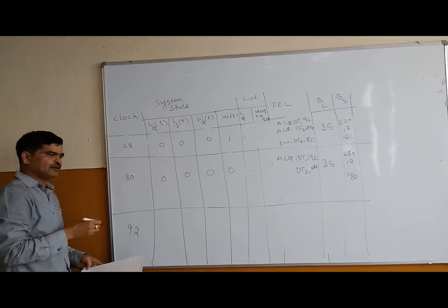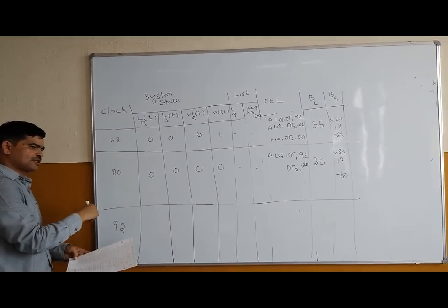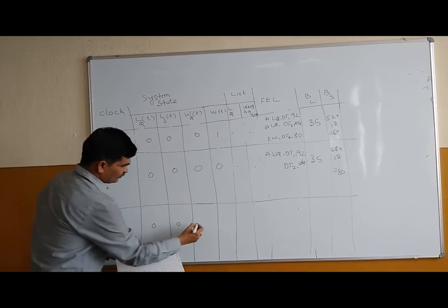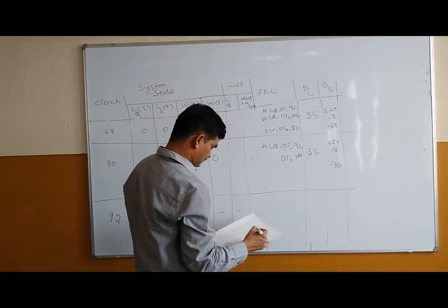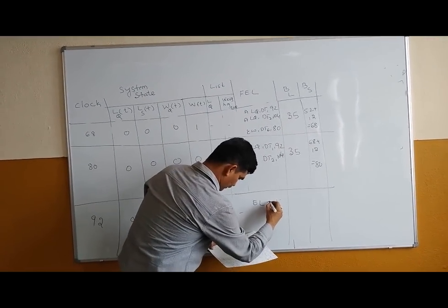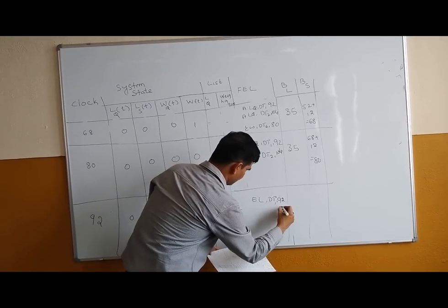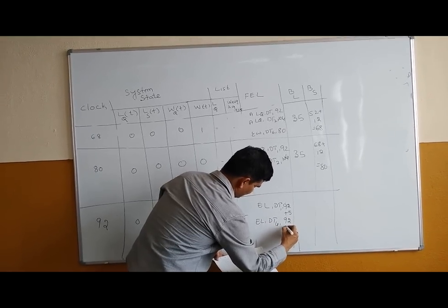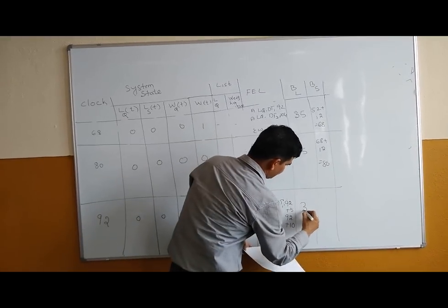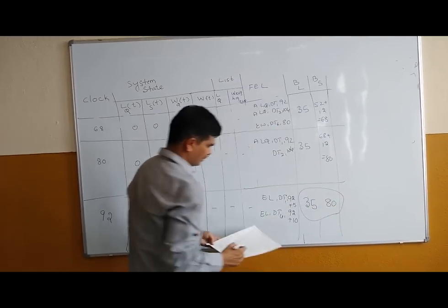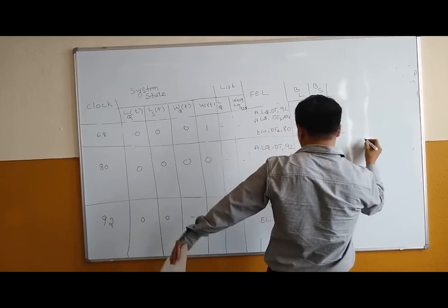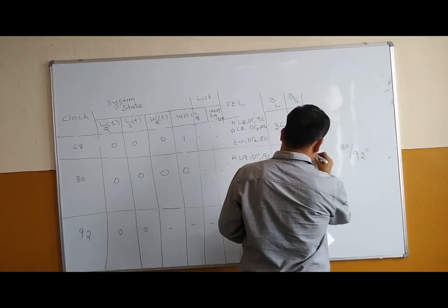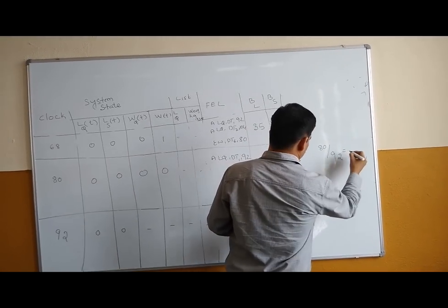At t=92: DT1 arrives back at the loader queue. The simulation stops here. At this point EL of DT1 begins — loading time is 10 minutes so it ends at t=102. Scale utilization is calculated as total BS divided by simulation time T: 80 divided by 92 equals approximately 0.8696. This is how you work out the dump truck problem using the ES-bar-TA algorithm on a double channel queuing system.